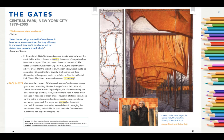Would the Gates cause celebration or controversy? Back in 1979, what were the chances of Christo and Jean-Claude constructing a giant artwork stretching 23 miles through Central Park? After all, Central Park is a New Yorker's big backyard — the place where they run, bike, walk dogs, play ball, skate, and even take rides in horse-drawn carriages. It has acres of green grass, thousands of stately trees, long curving paths, a lake, ponds, fountains, a castle, a zoo, sculptures, and a merry-go-round. The mayor was skeptical of the artist's proposal. Some environmentalists worried about it damaging the park's trees, plants, and wildlife. In 1981, the Parks Commissioner published a 185-page book saying no.